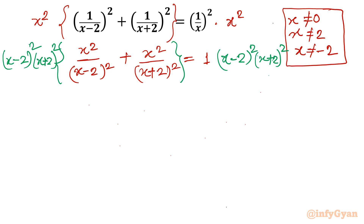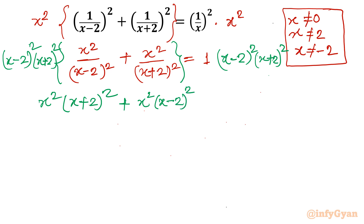Let's expand — you will understand easily. We multiply x squared by the first term: (x minus 2) squared over (x minus 2) squared cancels, leaving x squared times (x plus 2) squared. For the second term, x squared times (x minus 2) squared remains, and the (x plus 2) squared cancels. The RHS becomes (x minus 2) squared times (x plus 2) squared.